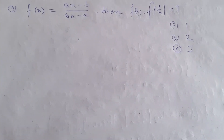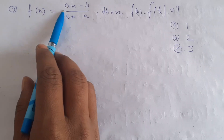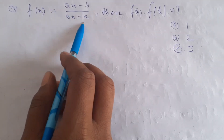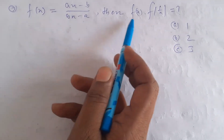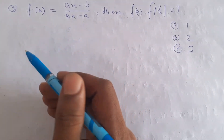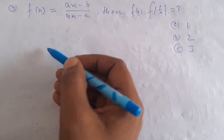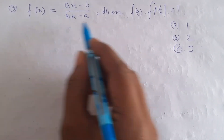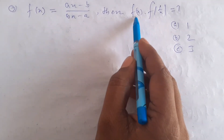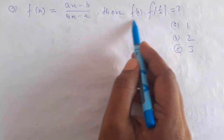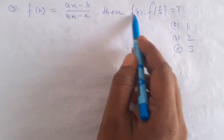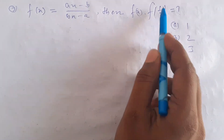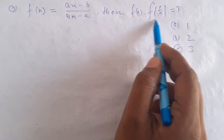Now we have to look at f of x equal to (ax minus b) by (bx minus a). Then find f(x) multiplied by f(1/x). We know another function, so we need to look at f(x) equal to a times x. So f is a function where f(x) equals 1/x.